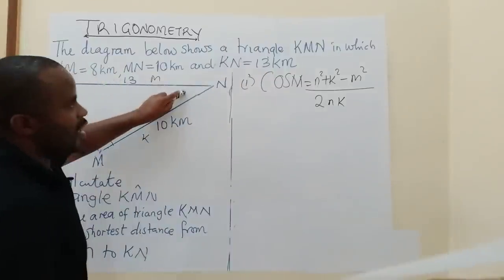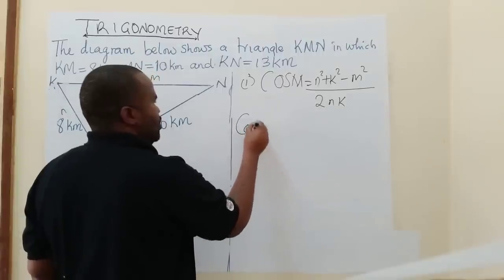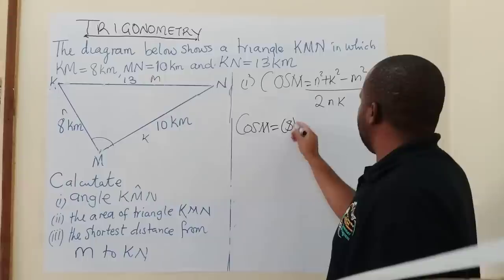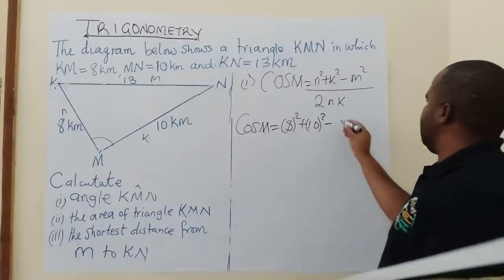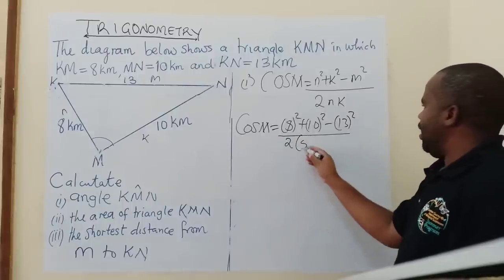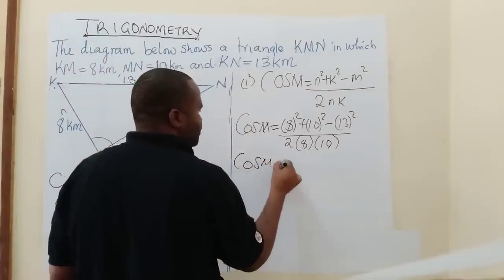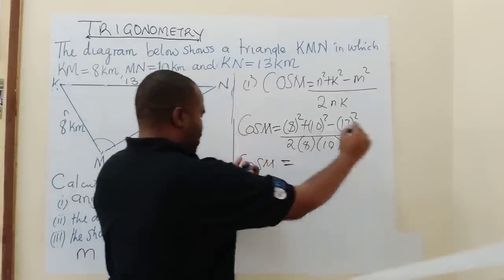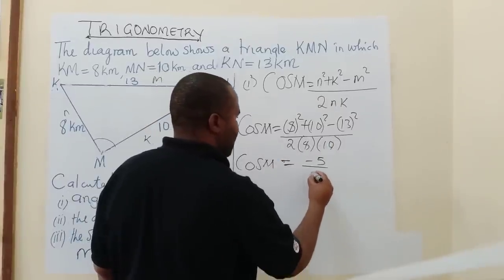So, cos M = (8² + 10² − 13²) / (2 × 8 × 10). Working this out on a calculator: the numerator gives −5, and 2 × 8 × 10 = 160. So cos M = −5 / 160.